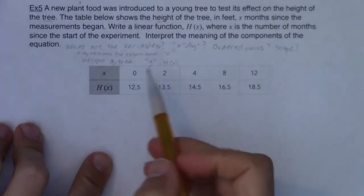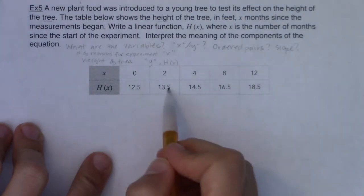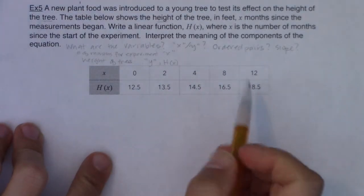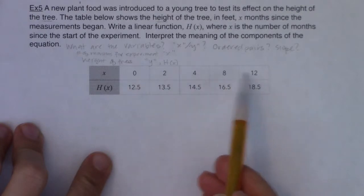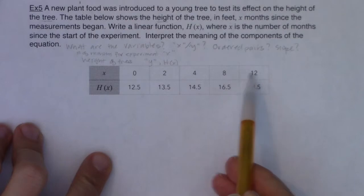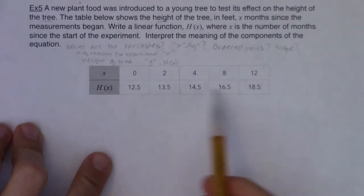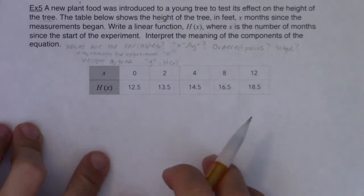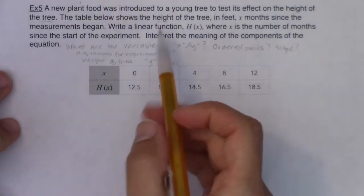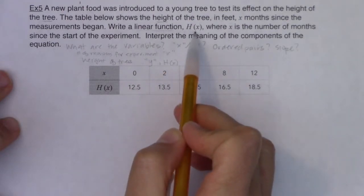All right, so these are all the number of months since the experiment began, and this is the various heights of the tree. And you can see they're varying, right? I go from 0 to 2 to 4 to 8 to 12. These are not the same numbers. These X values are changing. They are varying. They are not constant. And these Y values, or technically these H of X values, those are also varying. They're not constant. We can see the tree is growing. The height is increasing. All right, so with all of that, let's see what they're asking me to do. I have a bunch of setup, and the first thing it says is write a linear function, H of X.